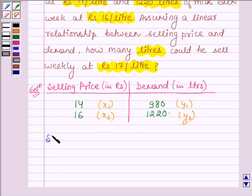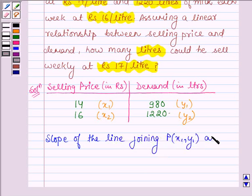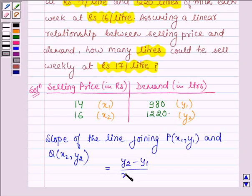Now we will find the slope of the line joining point P which is X1, Y1 and Q which is X2, Y2. So this is given by Y2 minus Y1 upon X2 minus X1